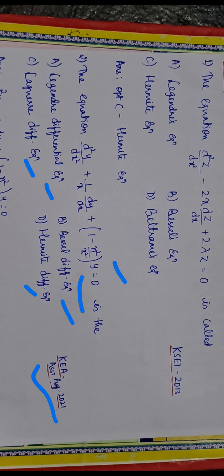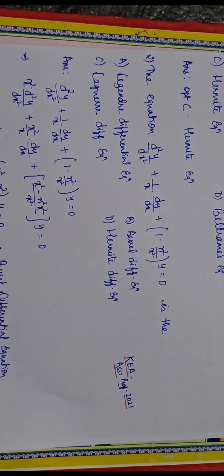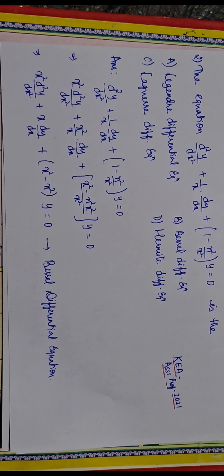To identify it, compare with the known equations. Here we have division by x and division by x². Let's simplify by multiplying both sides by x²: we get x² d²y/dx² + x dy/dx + (x² − n²)y = 0. This is similar to Bessel's differential equation. So option b is correct: Bessel's differential equation.